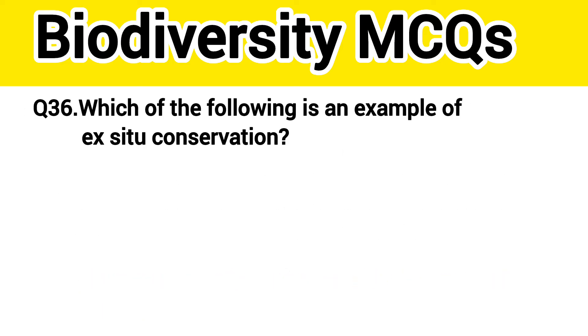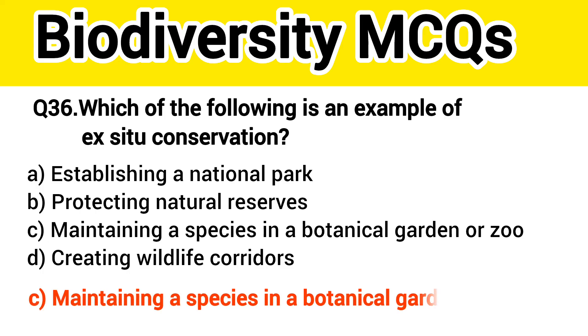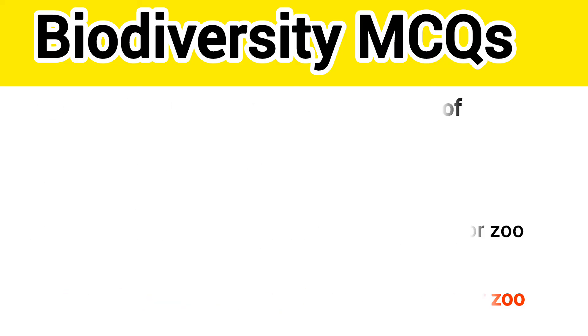Question number 37. Which of the following is an example of ex-situ conservation? The right answer, option C: Maintaining a species in a botanical garden or zoo.